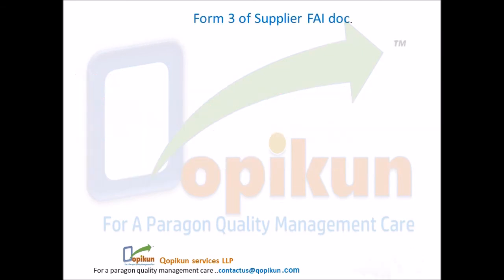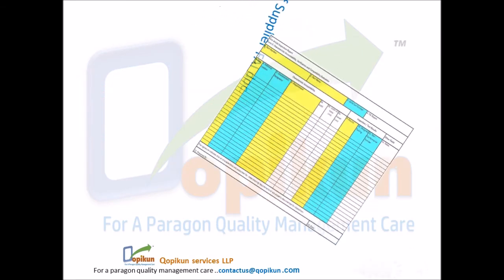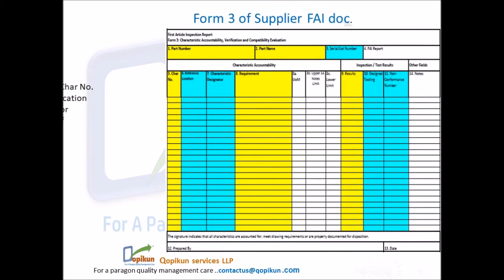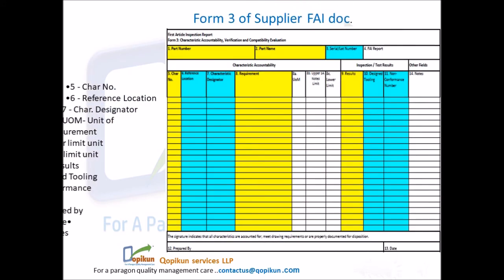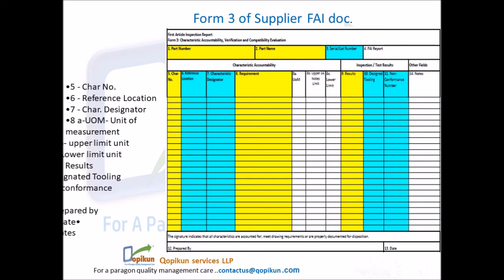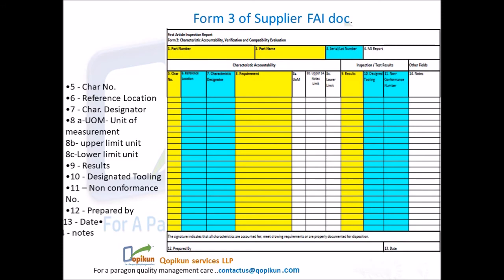Form 3 of supplier FAI DOC fields: 5. Characteristic number; 6. Reference location; 7. Characteristic designator; 8A. Unit of measurement; 8B. Upper limit unit; 8C. Lower limit unit; 9. Results; 10. Designated tooling; 11. Non-conformance number; 12. Prepared by; 13. Date; 14. Notes.